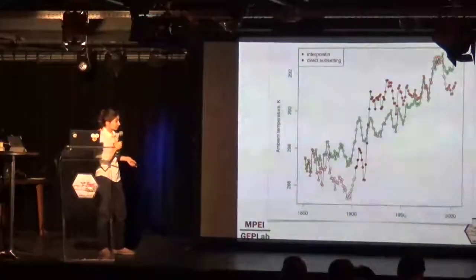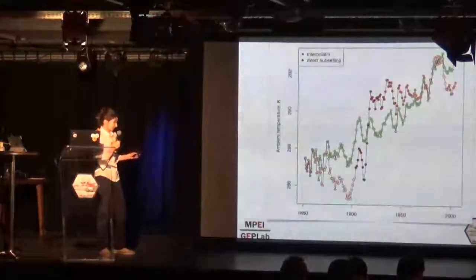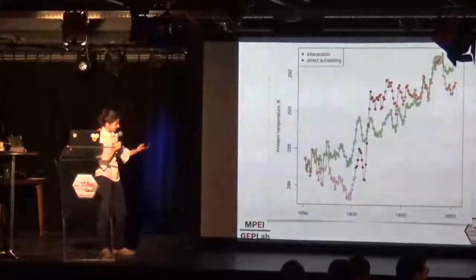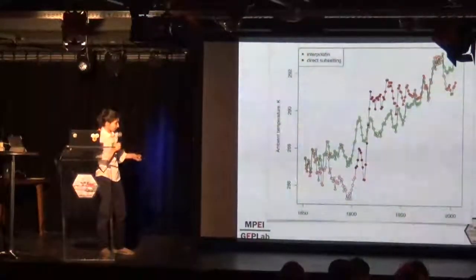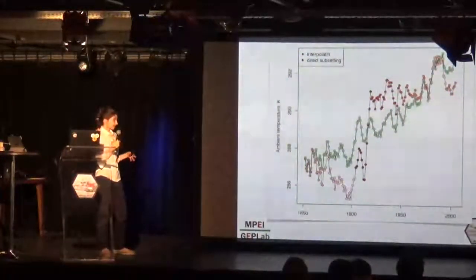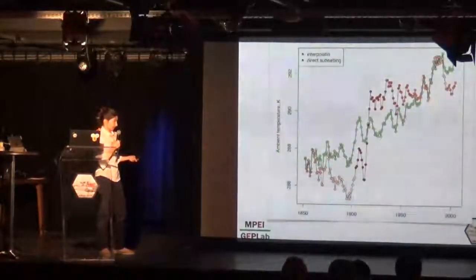If we compare our initial quick and easy approach and our more correctly obtained green line, we will see that our initial approach has distorted dramatically the structure of the time series.